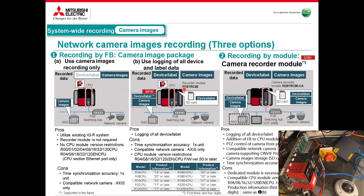In coming phases, there'll be a new product — the RD81RC96 — which will record 100% of all CPU devices. With your current CPU we can't get 100% of devices, but when we add this new recorder module, we'll be able to get everything: all the D's, all the labels, all the M's, everything logged constantly. The CPU will need to be upgraded as it's new hardware. The final phase, coming next year, is an update called the camera recorder module, which not only records everything in the CPU but also triggers and stores camera images, so everything is in one central location.